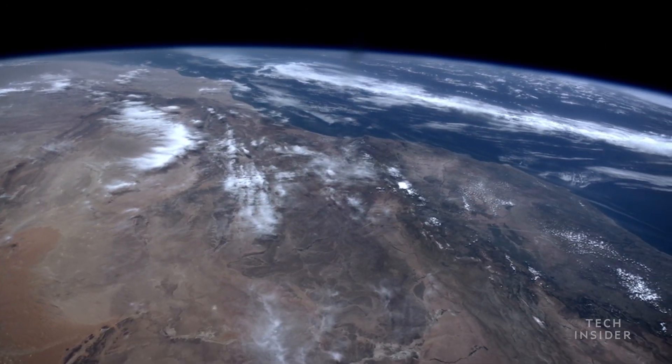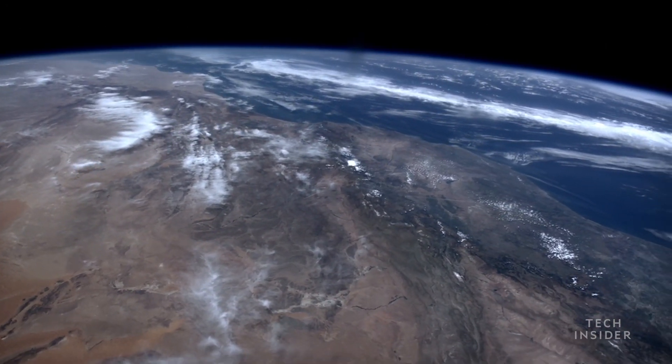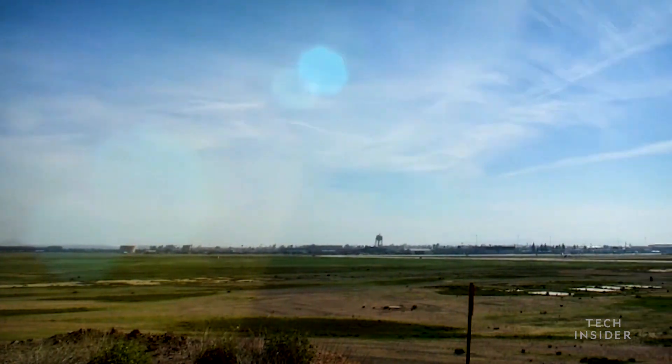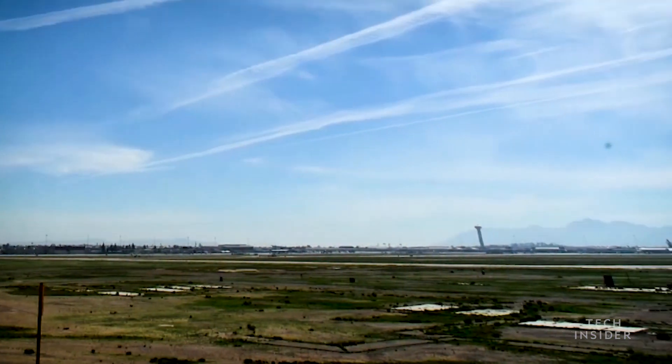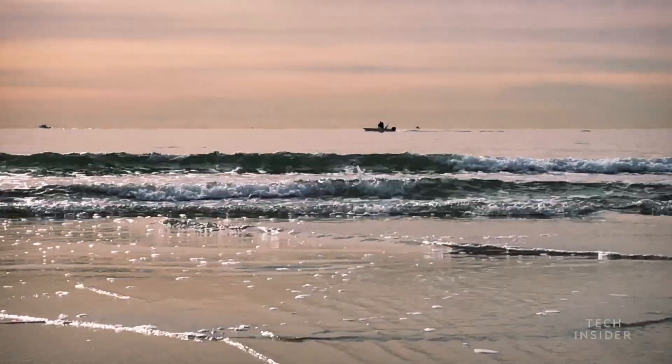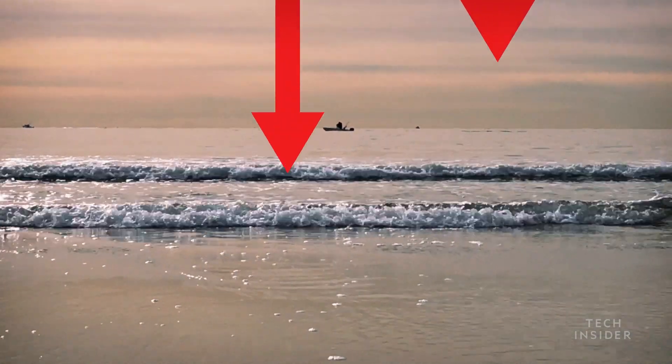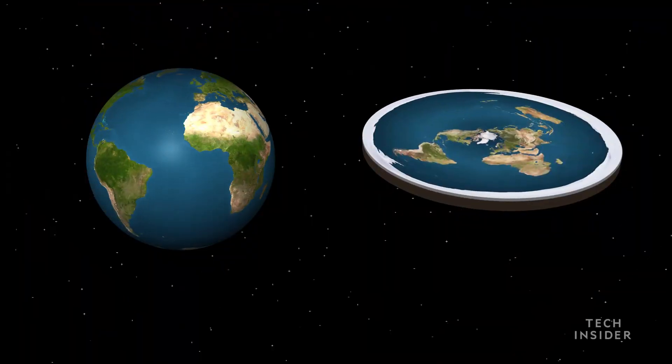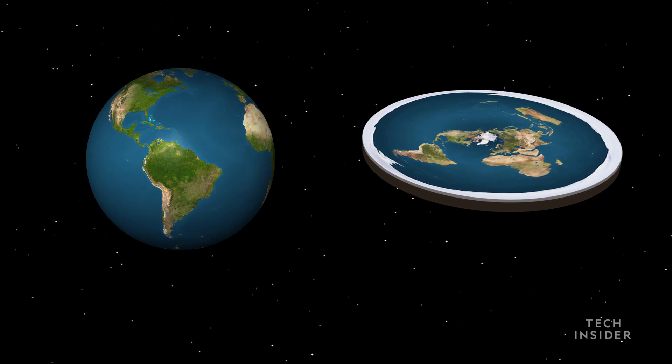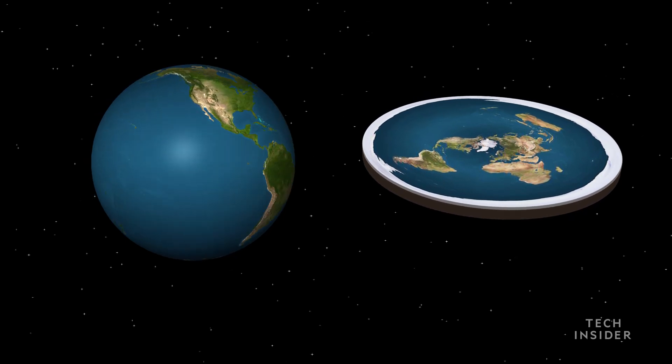Today it's nearly impossible to believe the Earth is anything but round, but for most of our history humans have thought the Earth was flat. The one concept our ancient ancestors were missing was gravity. Gravity's effects are the key to determining whether the Earth is actually flat or not.